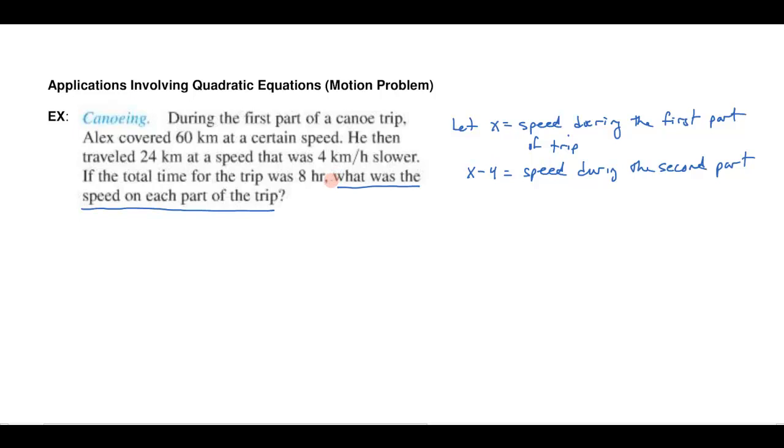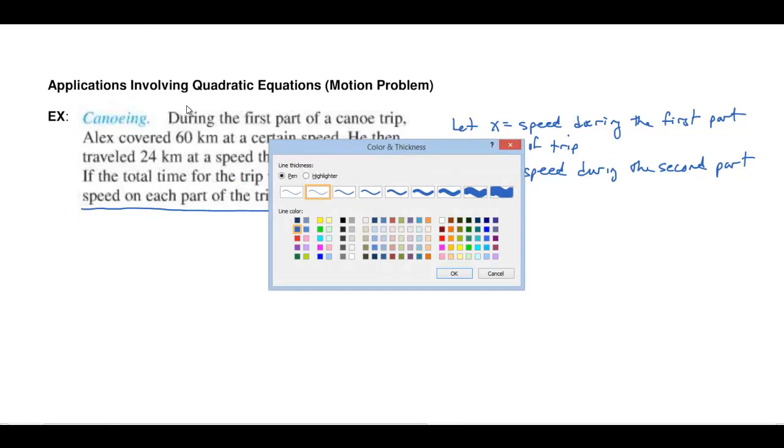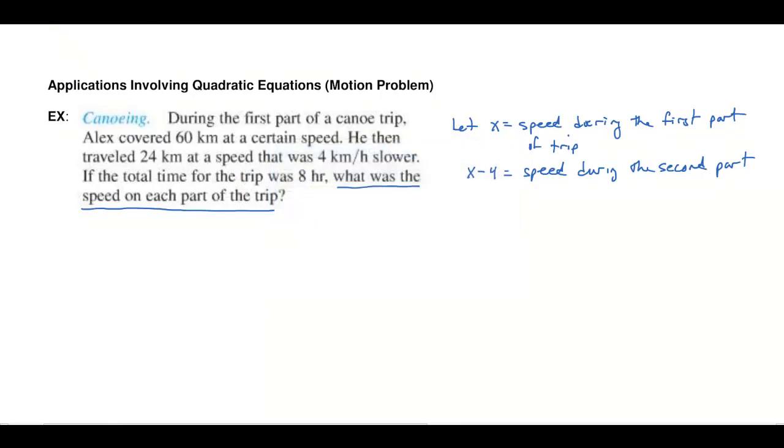And notice in this case these motion problems there's actually quite a lot of variables, things that are changing in the problem. For example, there's two motions and each of these motions has its own distance, its own rate, and its own time. And so there's really six variables. And so let's make a little chart to organize this information.